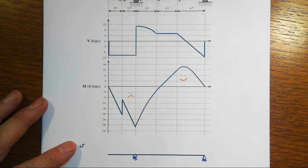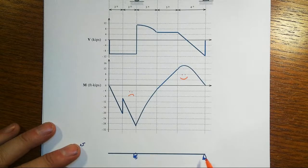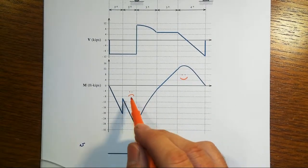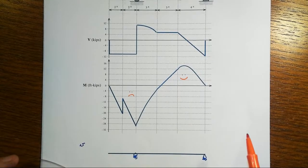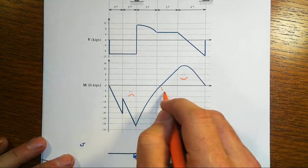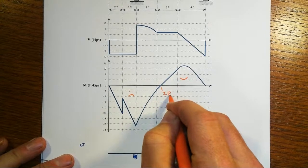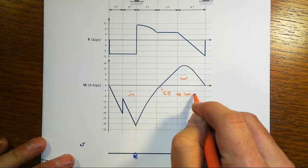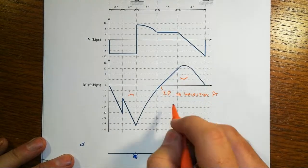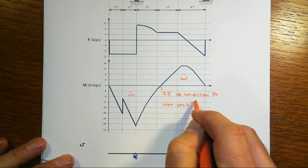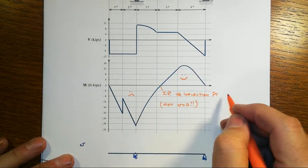Now, the boundary conditions are such that, again, no displacement transversely at the supports, and we have to somehow fit in these two curvatures. Now, note this location right here of zero moment is an inflection point. That is not, that is not V equal to zero, right? Just an inflection point.